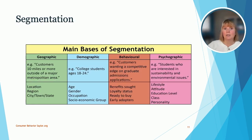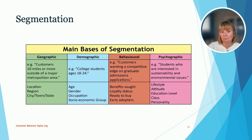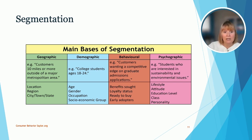This gives us an overview of segmentation. You've got geographics, demographics, behavioral, and psychographics. Geographics is based on location — like where are you located? Demographics might include age, gender, maybe an occupation, or social class — middle class, lower class — all of those things are considered demographics. For example, college students ages 18 to 24 would be a demographic.